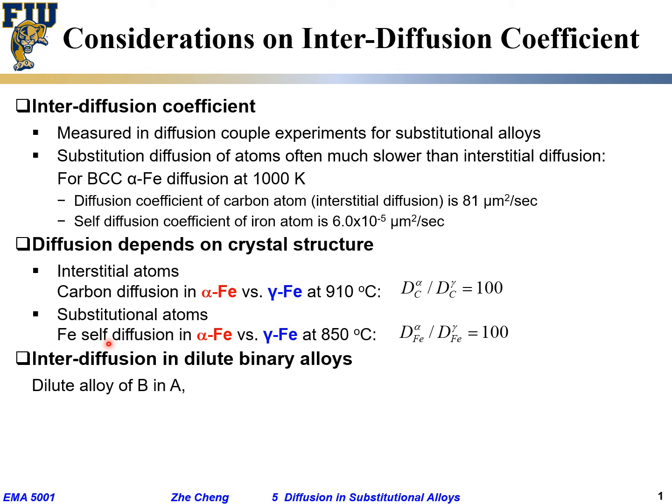For interdiffusion in a binary alloy — binary alloy means two components, one A and one B — if it's a diluted alloy, pretty much all A with very little B in it, then D̃ (the so-called interdiffusion coefficient or chemical diffusion coefficient) gives one value for the system: D̃ = D_A·X_B + D_B·X_A. When it's very diluted — B in A — X_B goes towards zero and X_A goes towards one.